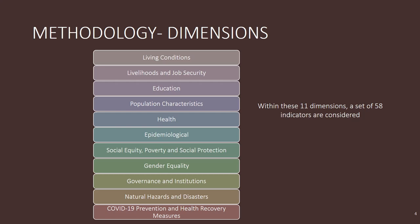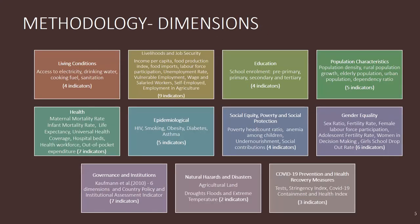Within these 11 dimensions we have a series of indicators. For living conditions, we include access to electricity, access to drinking water, access to cooking fuel, and access to basic sanitation — four indicators to measure that dimension. For livelihoods and job security, some indicators relate to vulnerable employment, food imports, food production index, unemployment rate, and employment in agriculture, among others.